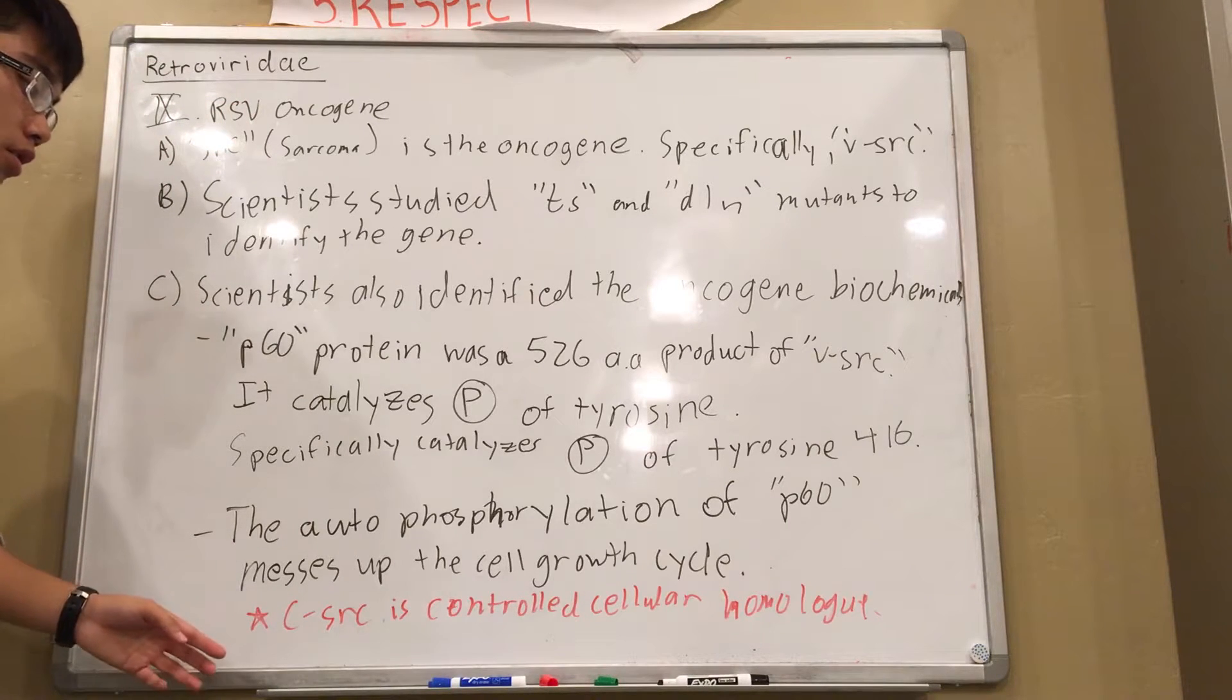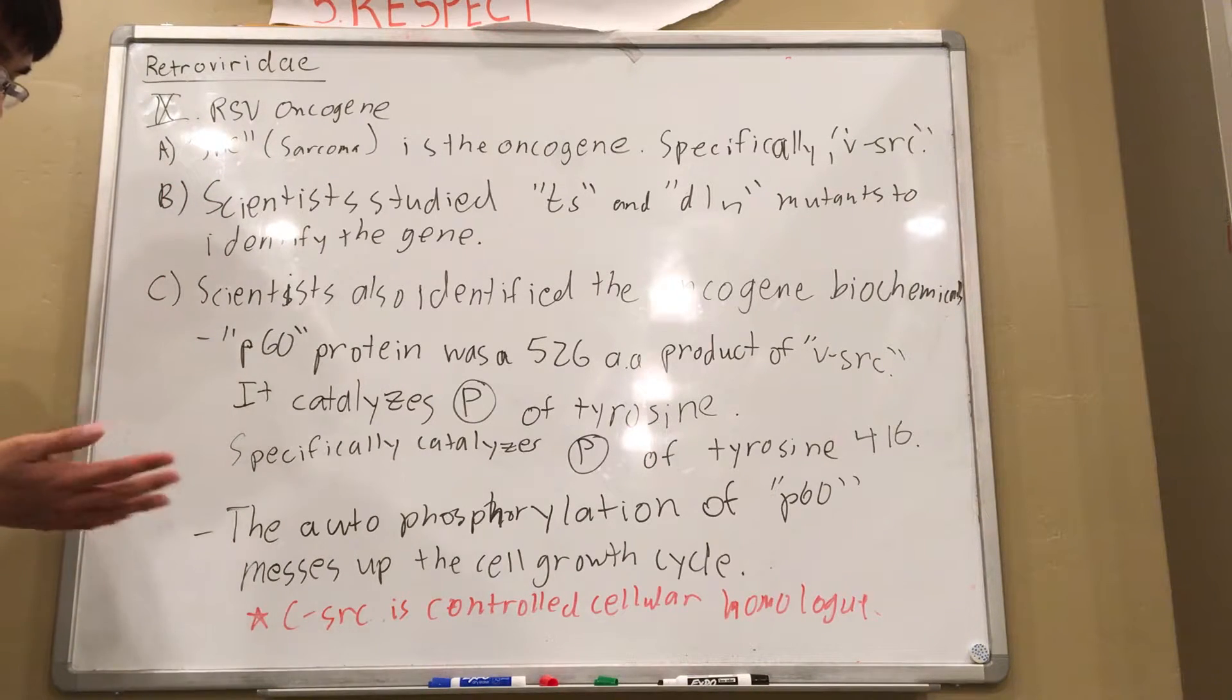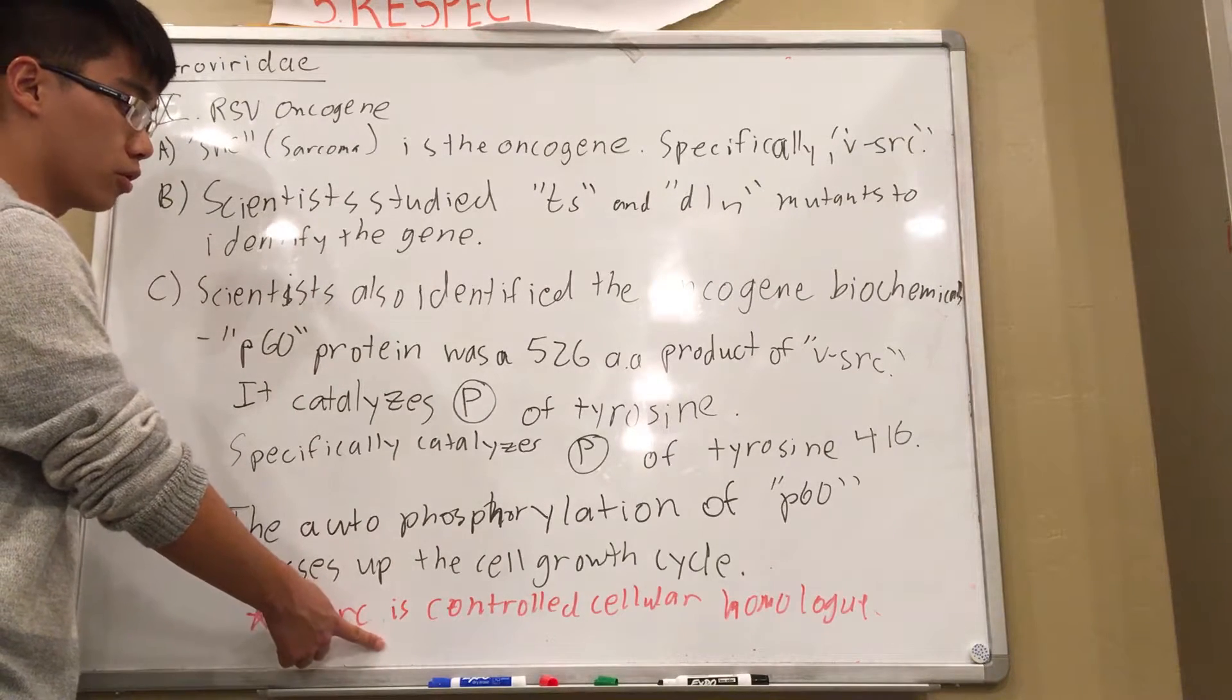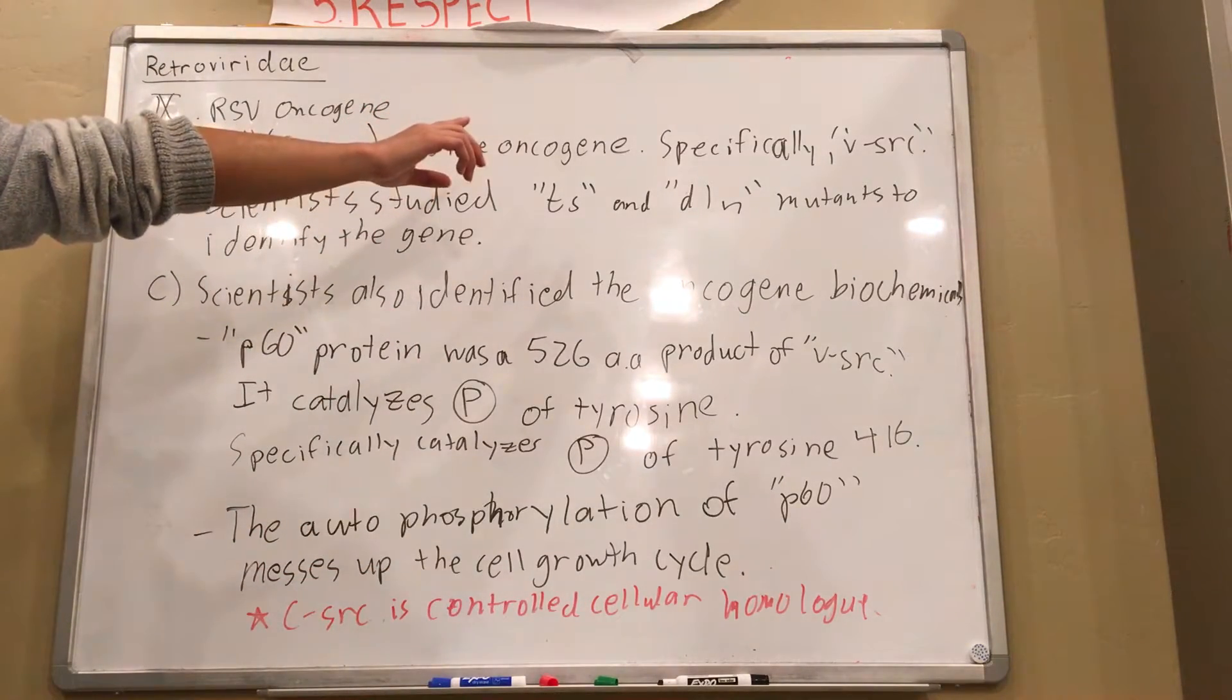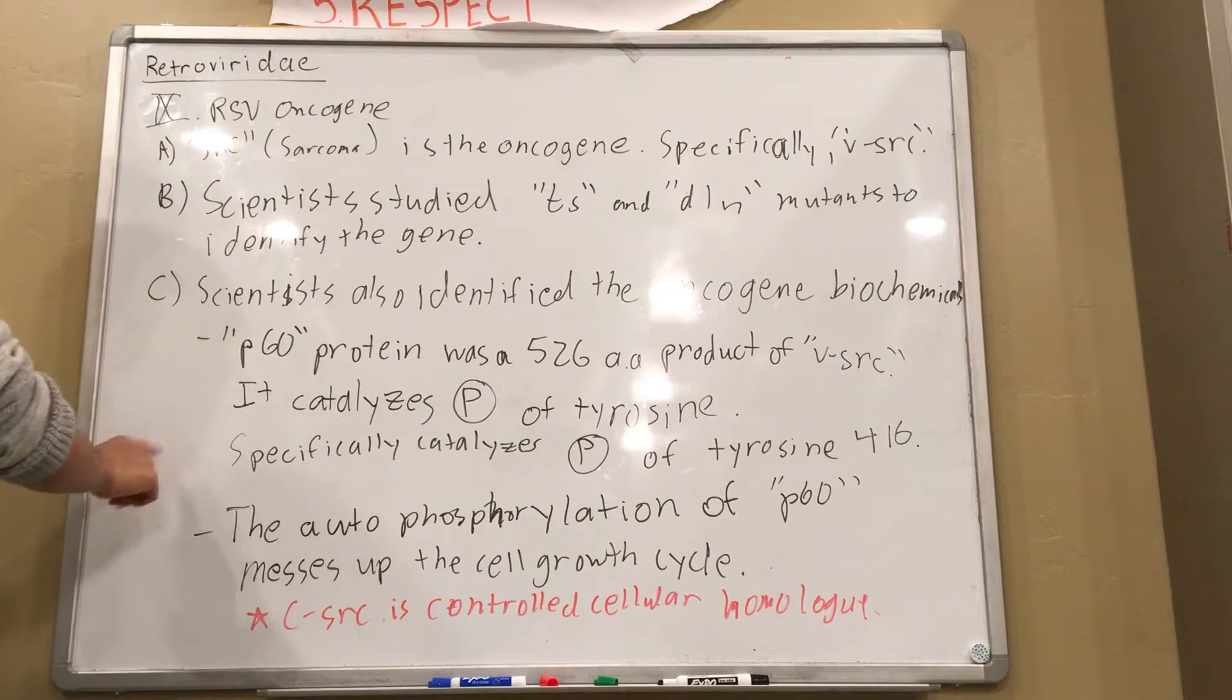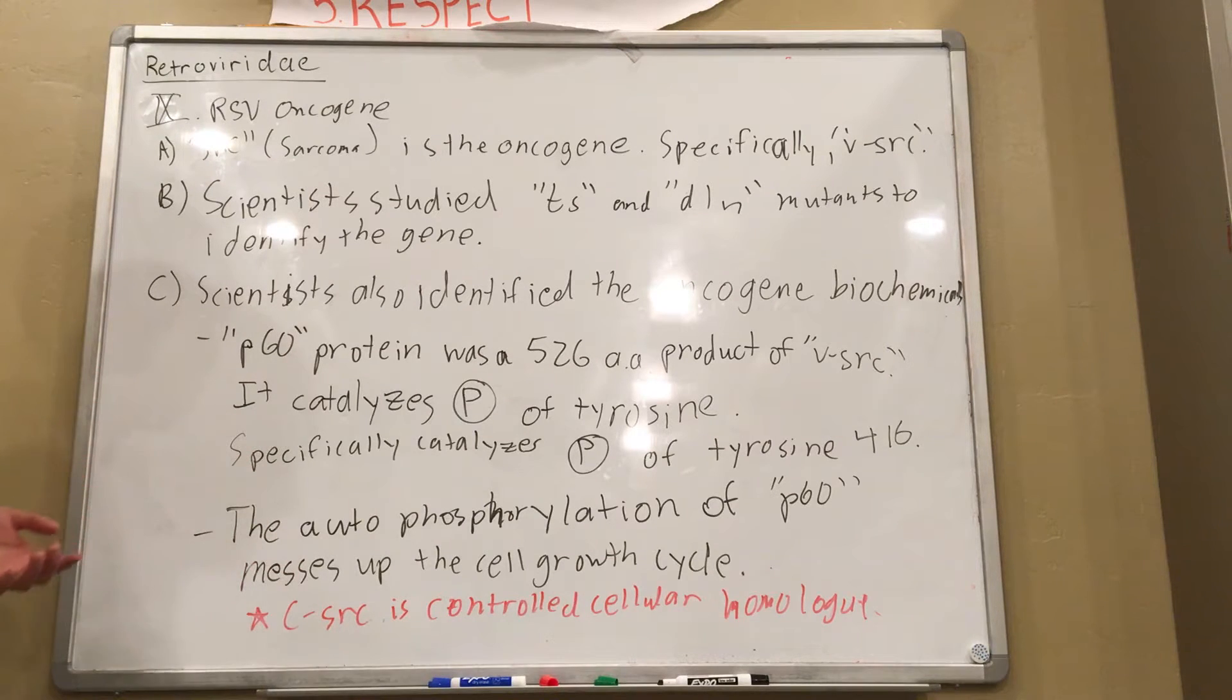In this specific case, v-src is a viral homolog of a cellular oncogene. So normally our cells, or in this case chicken cells, have this gene called c-src. And c-src tells the cell to grow. But usually this c-src is turned off because you don't want your cells to always be growing. What v-src does is that it makes this P60 protein. This P60 protein phosphorylates itself. And when it phosphorylates itself, it increases cell growth. And because it's a viral homolog, it's almost like the cell can't tell the difference between the gene product of c-src and v-src. So then the cell gets tricked into constantly growing and you get a tumor.